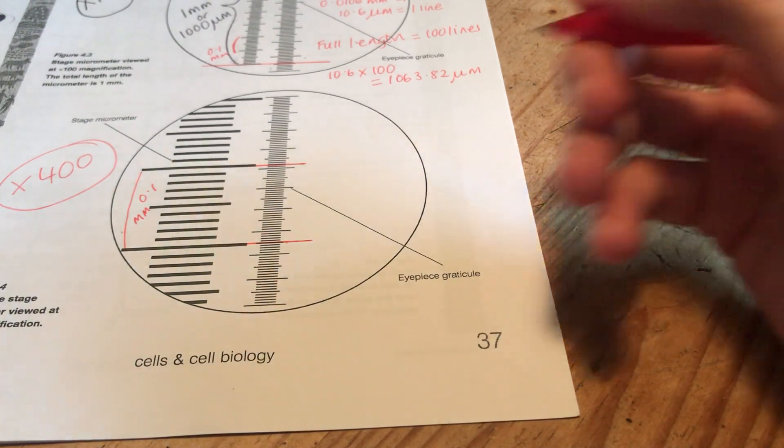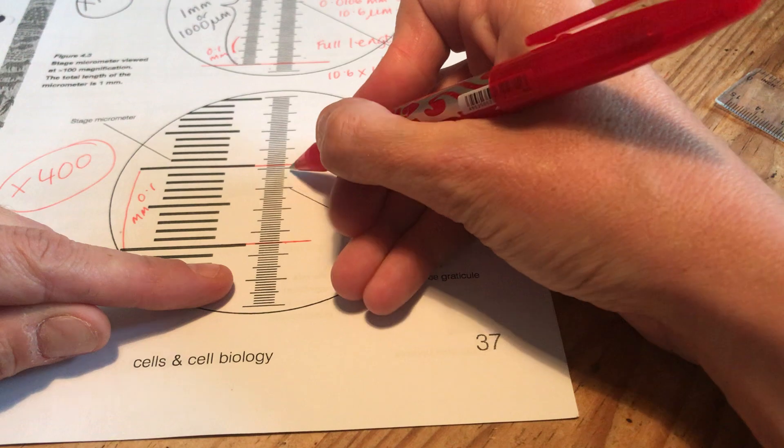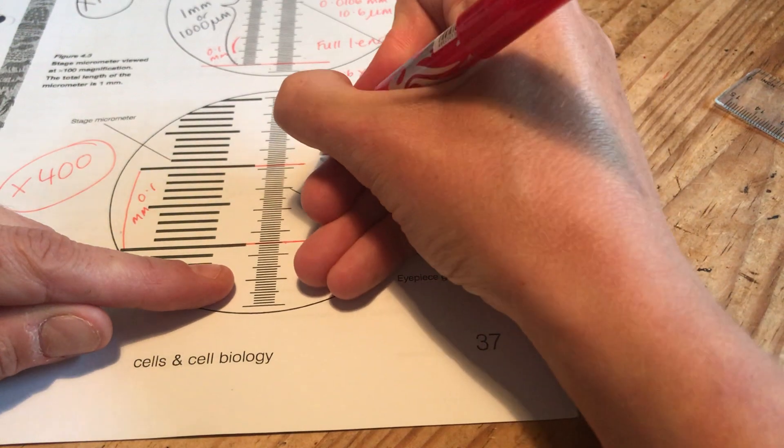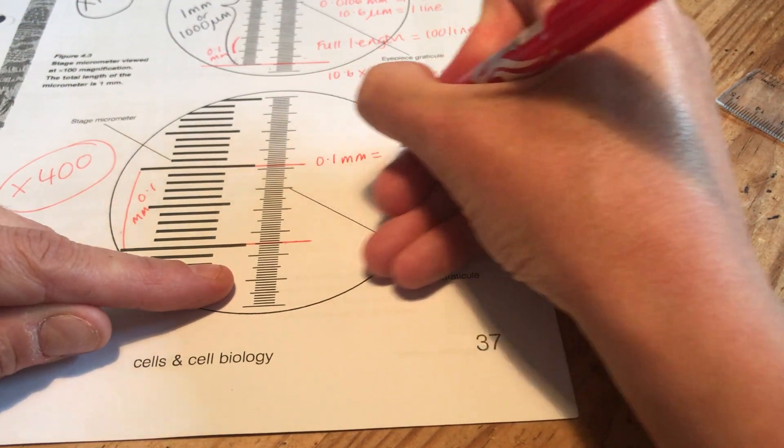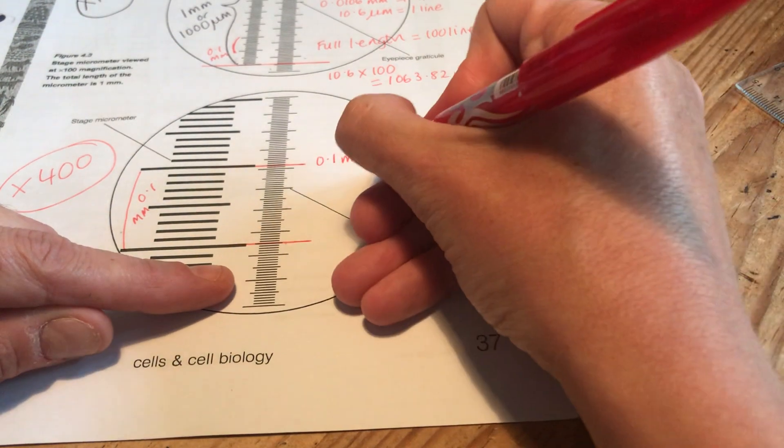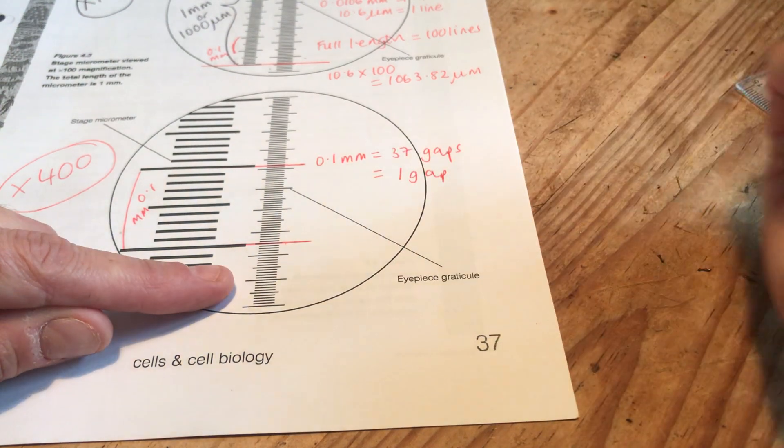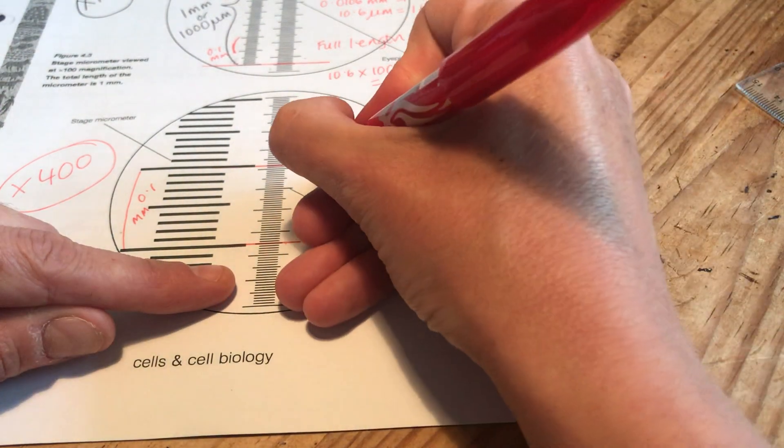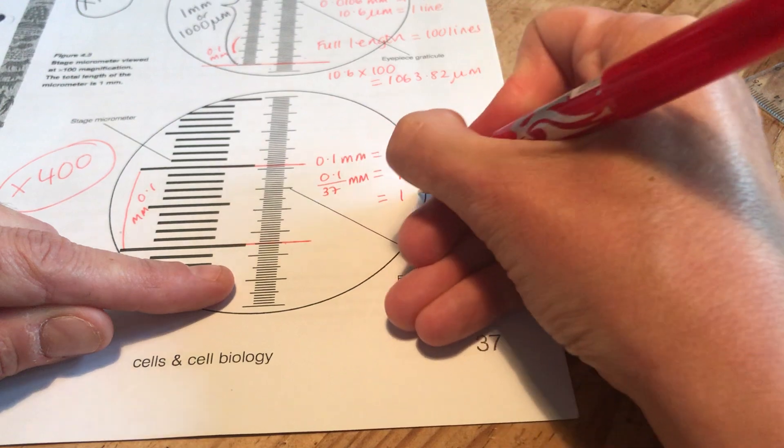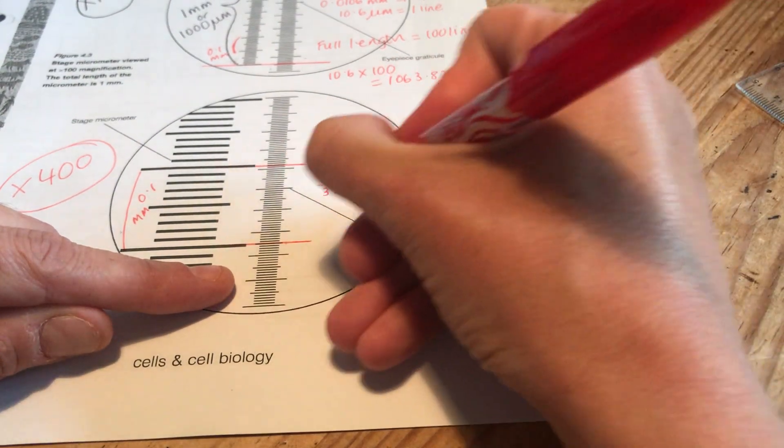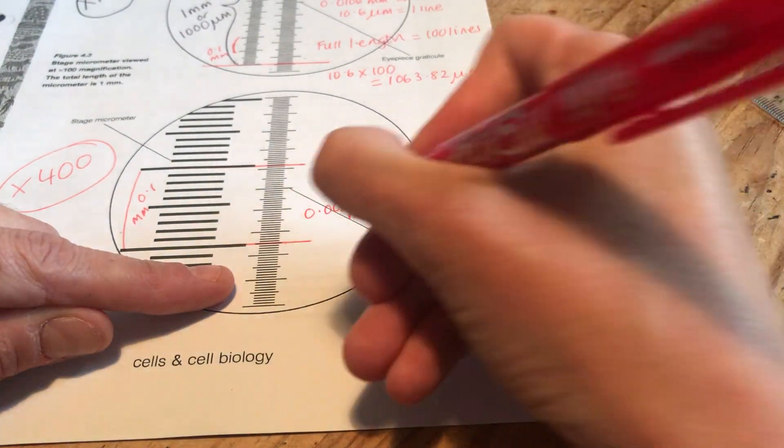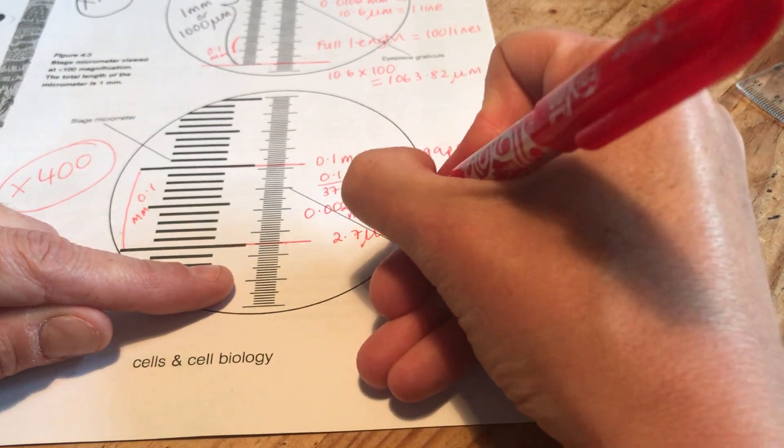And I'm going to count up how many gaps I've got here. So 10, 20, 30, 35, 36, 37. So 0.1 millimetres is 37 gaps on the eyepiece graticule. I want to know what one gap is worth at 400 times magnification. So I'm going to take 0.1 and split it up into 37 gaps and see what I get. So I'll do that and I'll find one gap is worth 0.0027 millimetres. Or if I tidy that up a little bit, 2.7 micrometres.